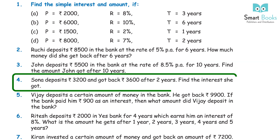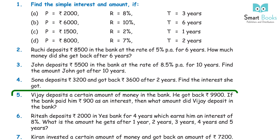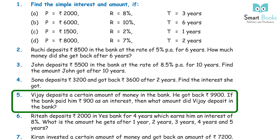Question 4: Sona deposits Rs 3,200 and got back Rs 3,600 after 2 years. Find the interest she got. Answer: Rs 400. Question 5: Vijay deposited a certain amount of money in the bank. He got back Rs 9,900. If the bank paid him Rs 900 as interest, what amount did Vijay deposit? Answer: Rs 9,000.